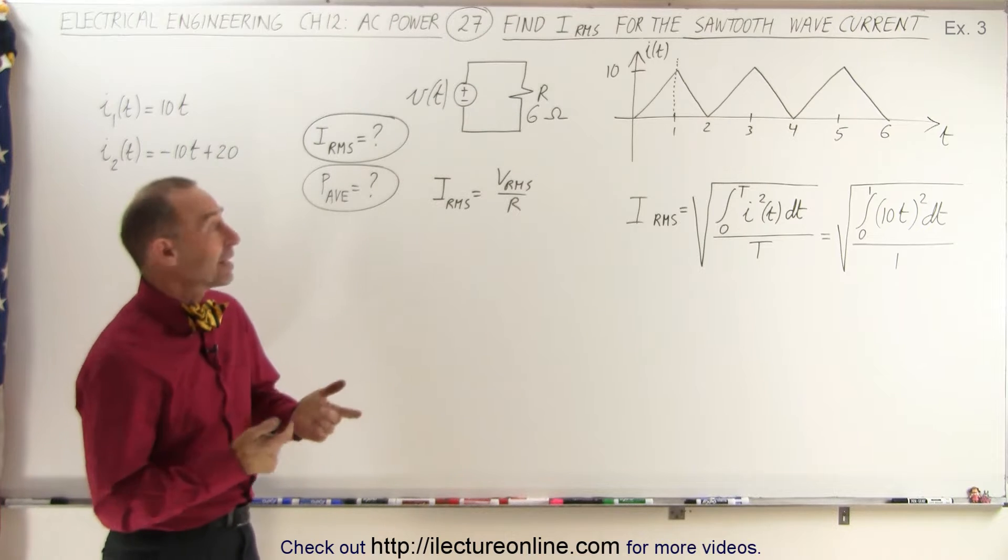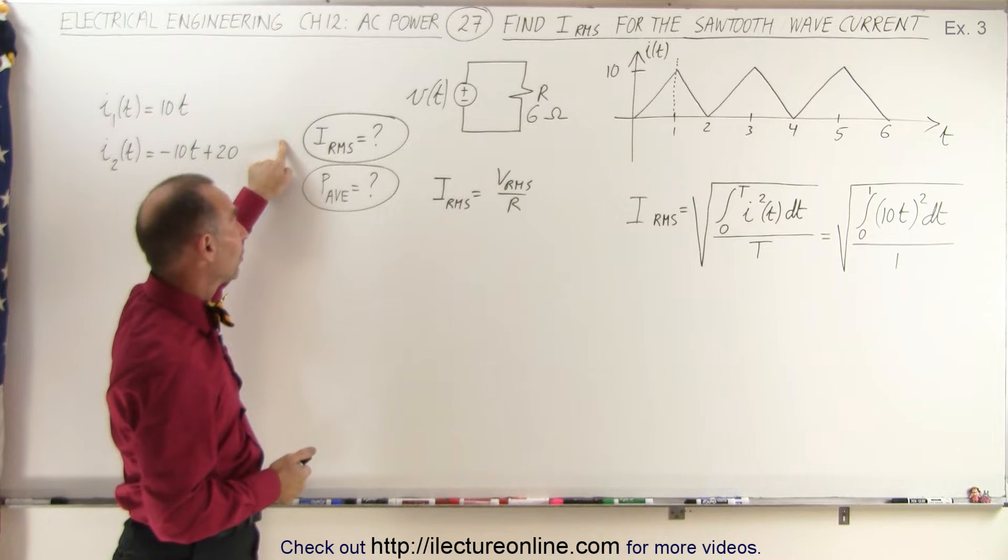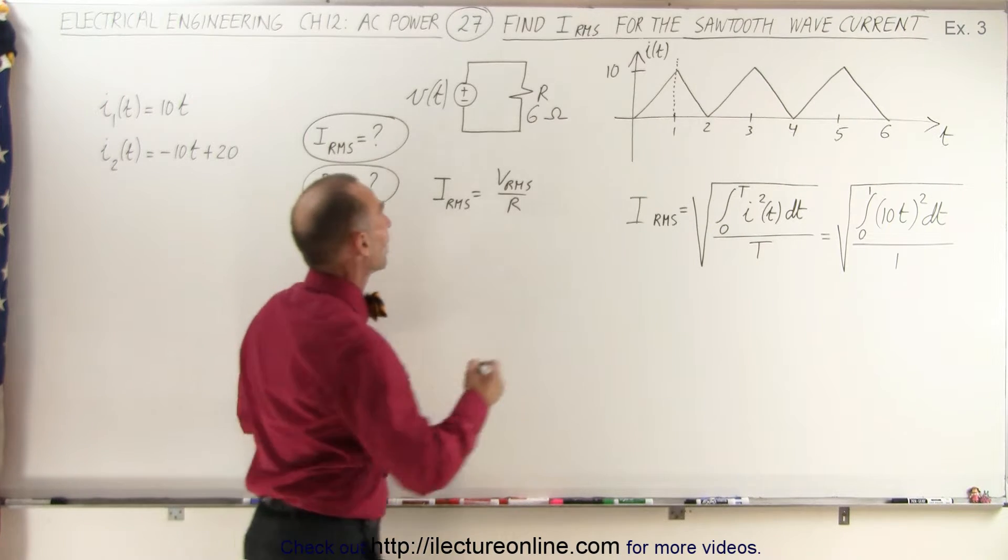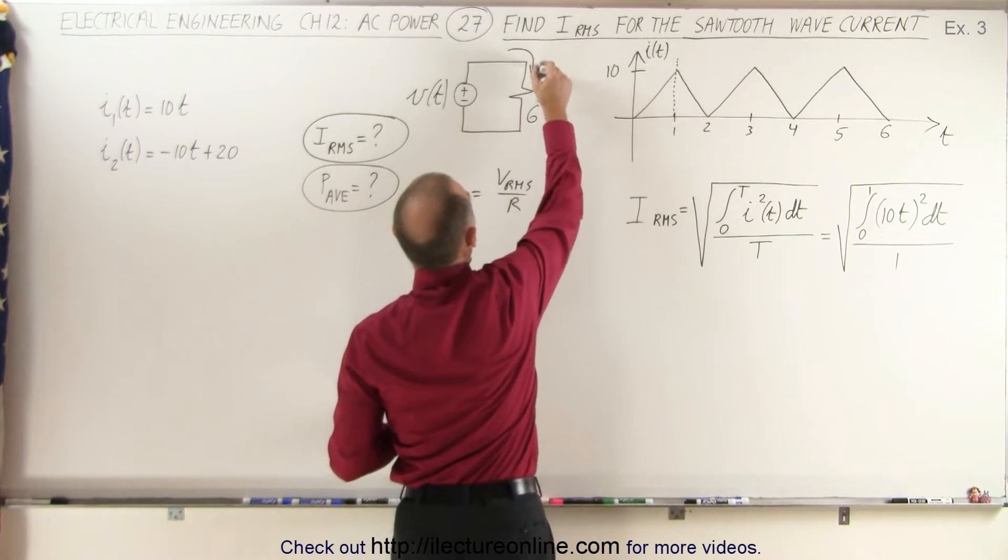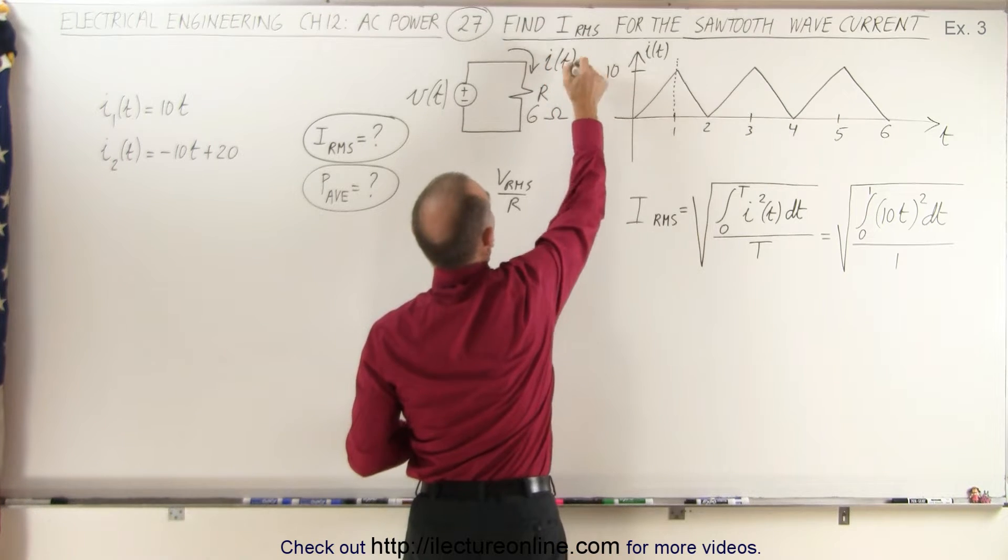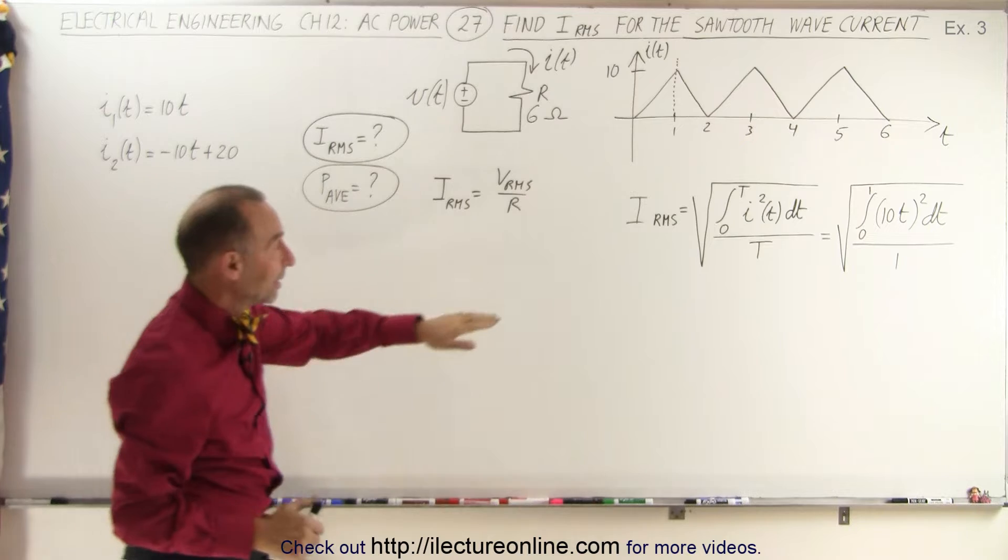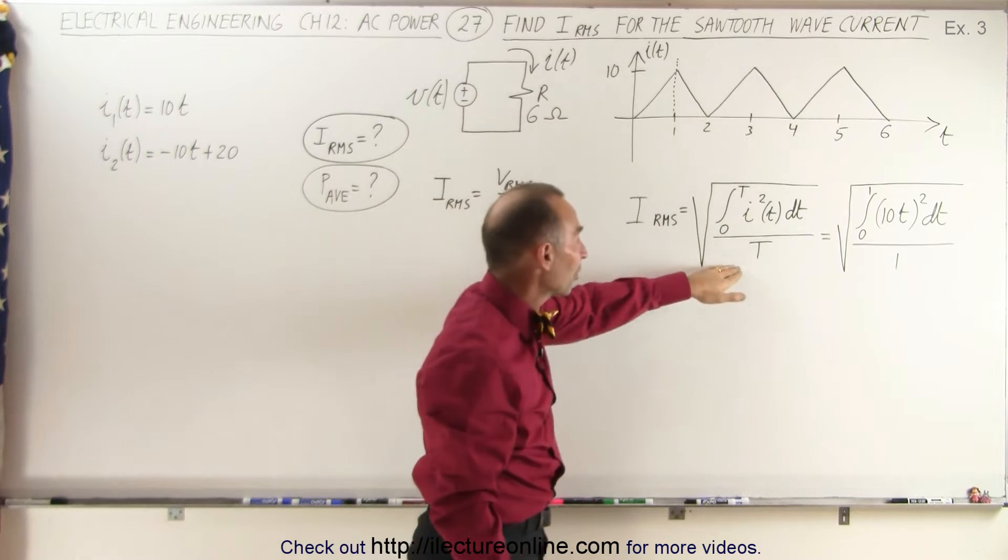Anyway, what we're trying to find is the RMS current and the average power. We have a current that's defined by that graph. We're going to find the RMS current using the same general format.